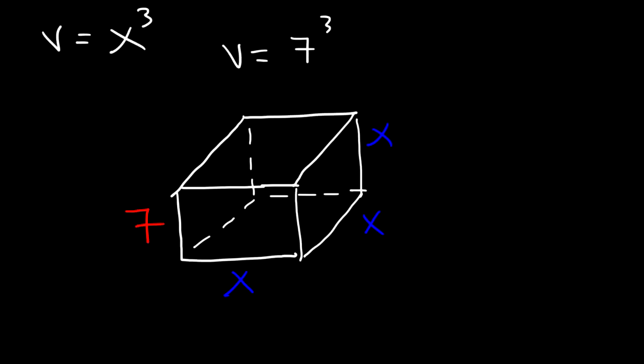So in this example, it's going to be 7 to the third power, or 7 times 7 times 7. 7 to the third power is 343.